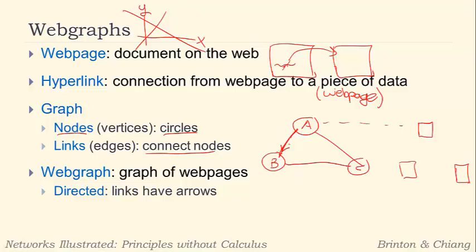So A may connect to B, but B may not connect to A. And C may connect to A, but A may not connect to C. And C may connect to B, for instance, B may not connect to C. So when we're dealing with a graph of the internet or a graph of the web pages, these links are directed because hyperlinks only go one way. Just because A points to B doesn't mean B is going to have a hyperlink back to A.